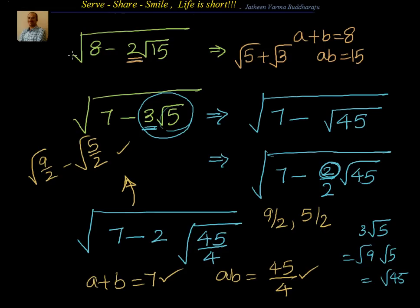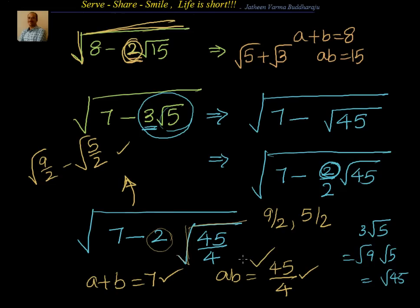So that's how you find the square root of a surd. The most important thing to remember is: whatever the problem, convert it so you have an integer value, plus or minus, then 2 times some irrational number. That 2 must be there — if it's not, manipulate to get it. Whatever remains inside the square root is then ab, as shown in our derivation. I'll catch you again with another interesting topic. Thanks for your time and support. Bye for now.